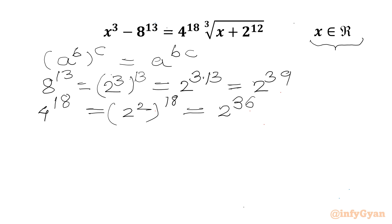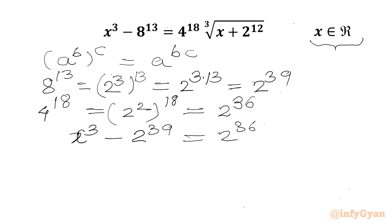Now we will write our equation: x³ − 2^39 = 2^36 × ∛(x + 2^12).